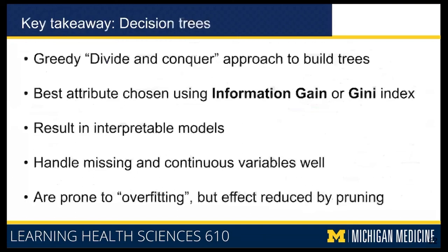Key takeaways: decision trees use a greedy divide-and-conquer approach, the best attribute is chosen using information gain or Gini index, they produce interpretable models and explicit decision rules, they handle missing values and continuous variables well, and they are prone to overfitting but this can be reduced by pruning. Decision trees are very strong baseline models for supervised machine learning, and they are so powerful that multiple trees can be grouped together to create even stronger classifiers — which we will cover in a few weeks.